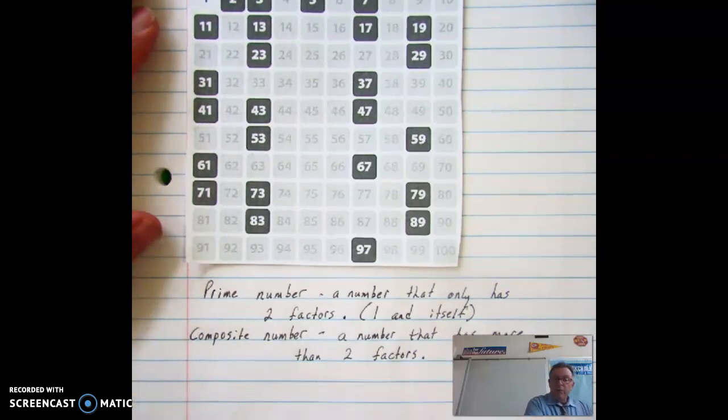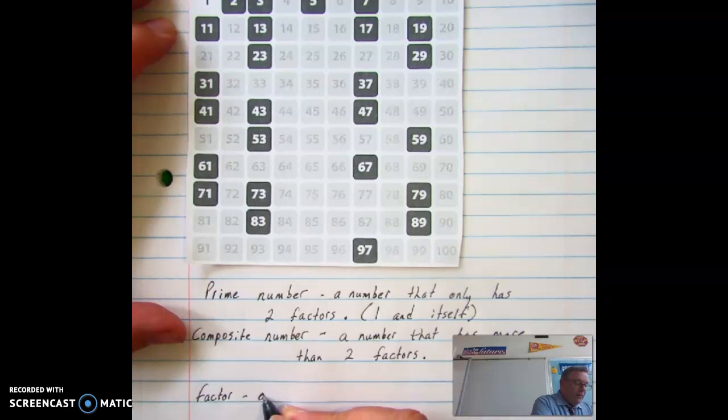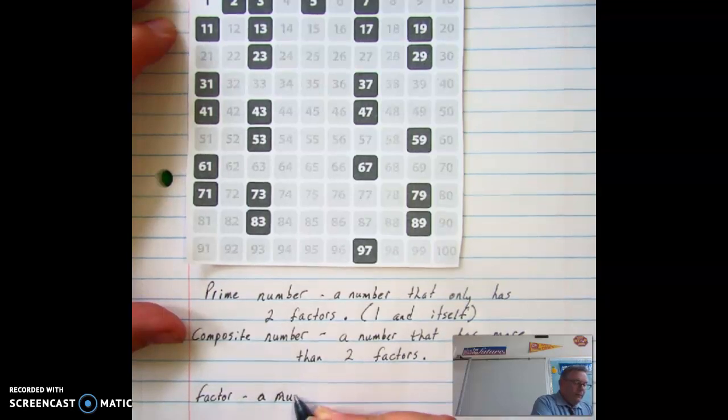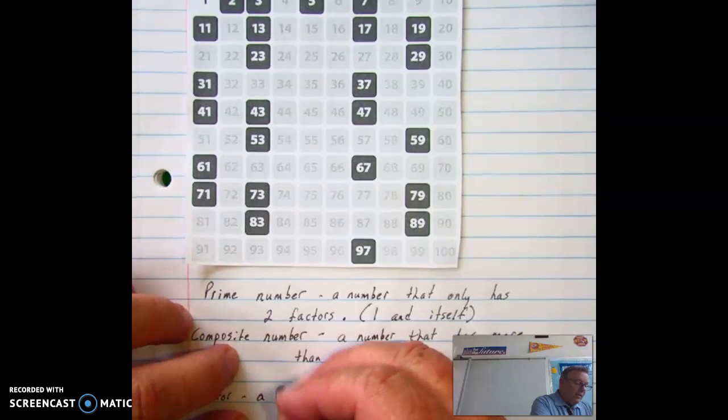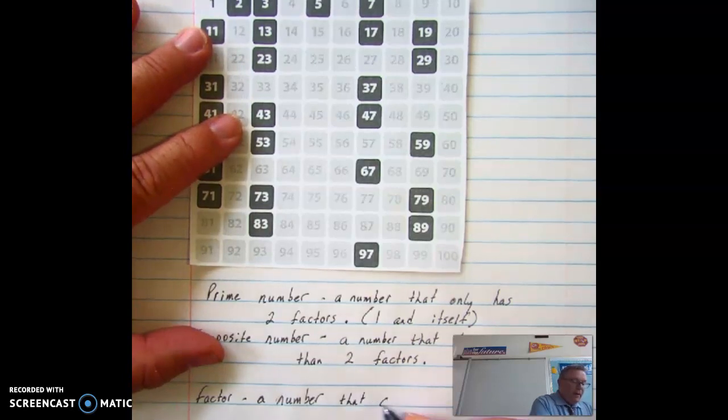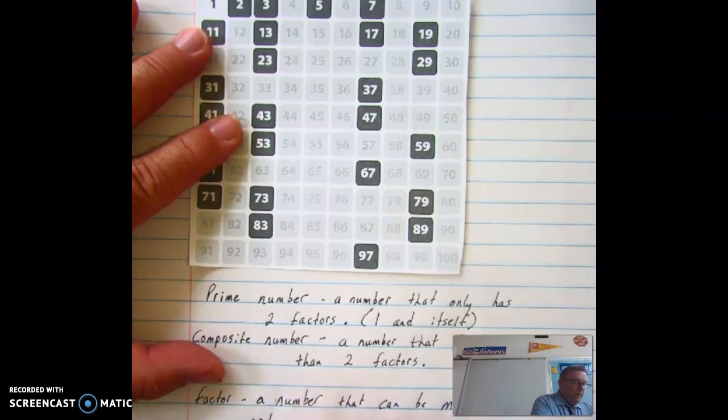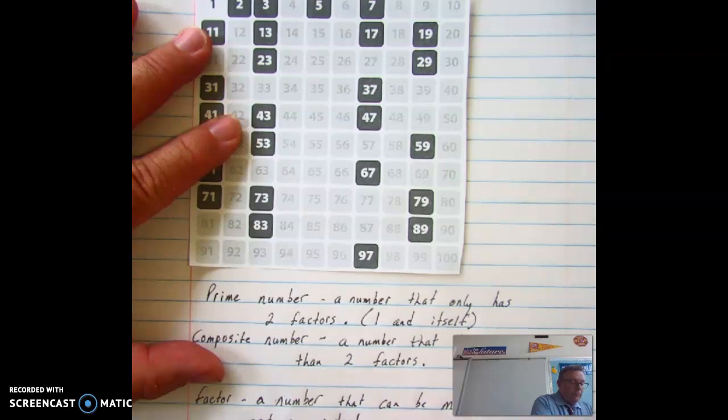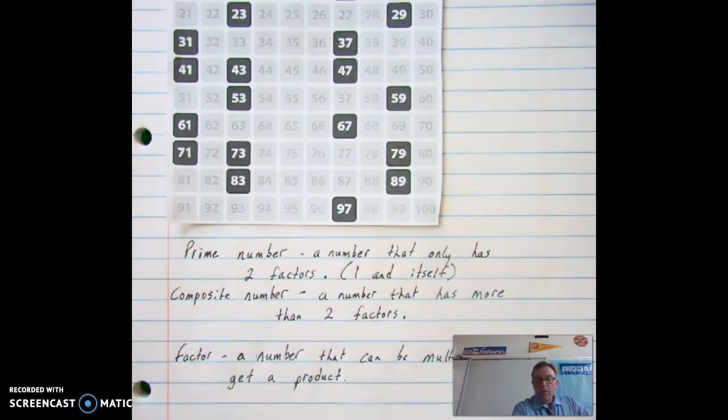A factor is a number that can be multiplied. So when you think about numbers that you're going to multiply, a factor are the two numbers that you multiply together.